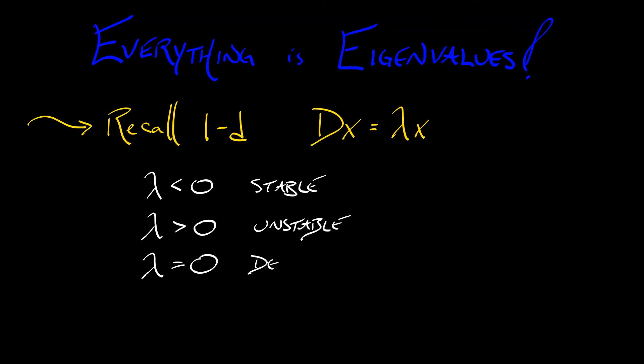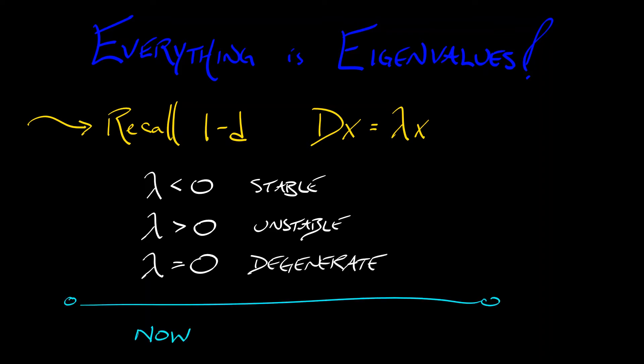And of course, when lambda was zero, it was just degenerate. Now in 2D, we have a pair of eigenvalues for our linear system, lambda 1 and lambda 2. I wonder, are we going to be able to use the same stable-unstable dichotomy? Well, it's a little more complicated than that. In fact, you've got a regular zoo going on.